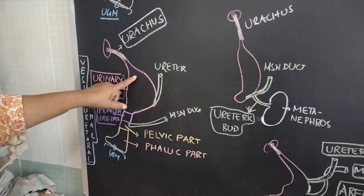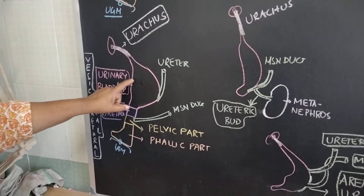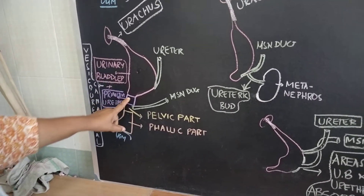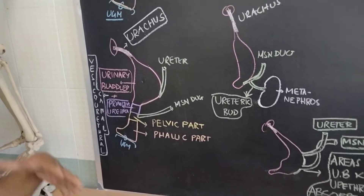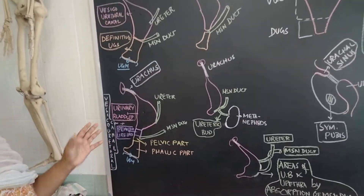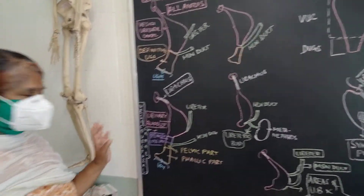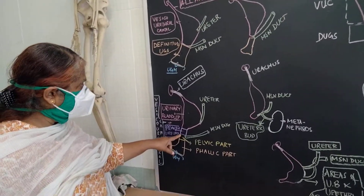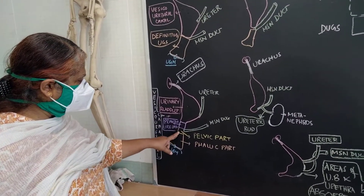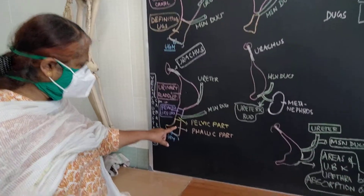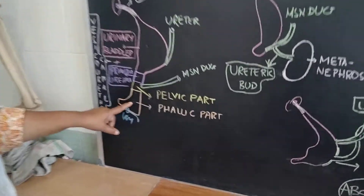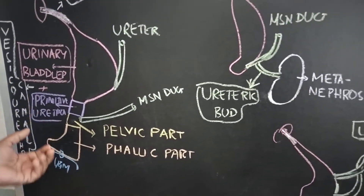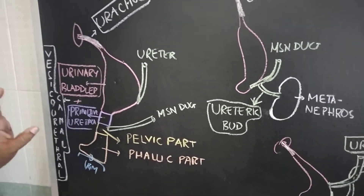The vesico-urethral canal then divides to form the urinary bladder and primitive urethra. That is the urethra in the case of the female — 4 centimeters — and in the case of males it is the prostatic urethra. Then from the definitive urogenital sinus, the pelvic part and the phallic part will be taken up by the genitourinary system, and the formation of the male urethra we will see in the next class.